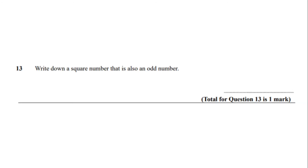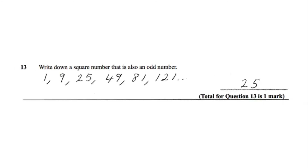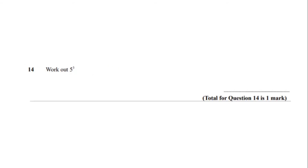Question number 13, write down a square number that is also an odd number. Again for this question you should list out all the square numbers and find the first odd number. You should have got 25. Question number 14, work out 5 cubed. You should have got 125.